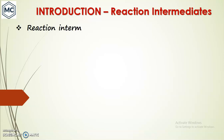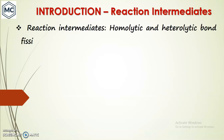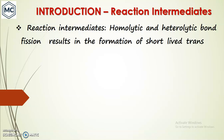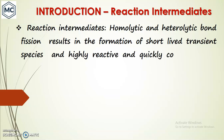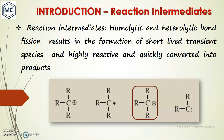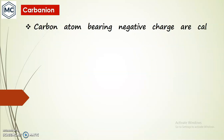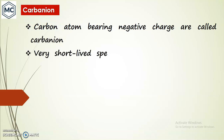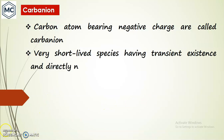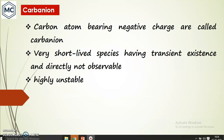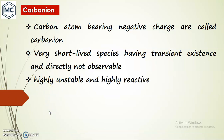We already discussed that reaction intermediates are usually formed by homolytic and heterolytic bond fission, which results in the formation of very short-lived transient species that are highly reactive and quickly converted into products. Today we are discussing the carbanion intermediate. A carbanion is a carbon atom bearing a negative charge. It is a very short-lived species with transient existence, not directly observable, and is highly unstable and highly reactive.